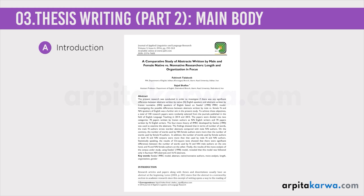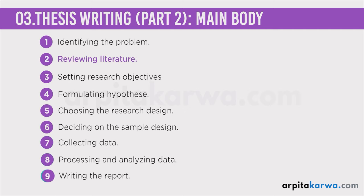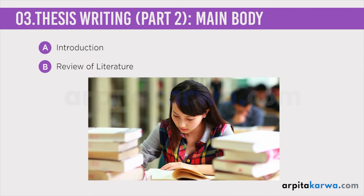The next chapter in the main body is the review of literature. This corresponds to the second step of the research process. Whatever you have read in the literature related to your research is stated in this chapter. Here you give insights about research already conducted on that particular topic and highlight their shortcomings.